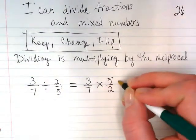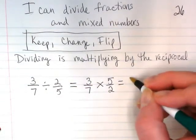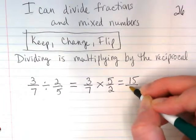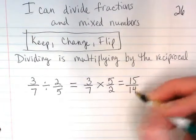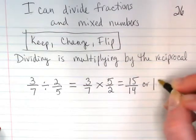And then we can just use our rules that we used before. We're just going to multiply straight across. 3 times 5 is 15. 7 times 2 is 14. And we can leave it in that form or we can turn it into a mixed number.